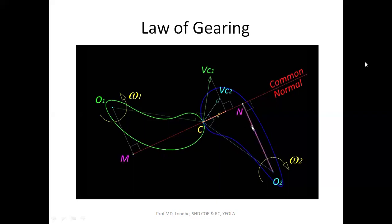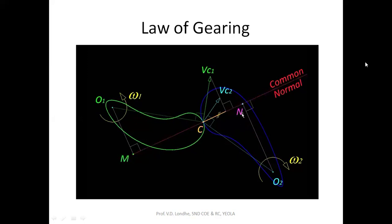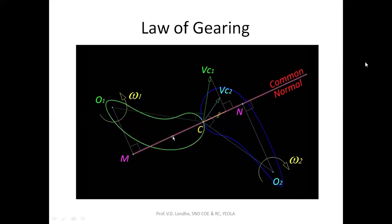We drop perpendiculars from each center onto the common normal, naming the foot points M and N. Since two points in a rigid body must have identical velocity components along the line joining them — otherwise they would come closer or fly apart — point M on the green body and point C share identical velocity components along the common normal. Similarly, N on the blue body and C share identical velocity components along that line.